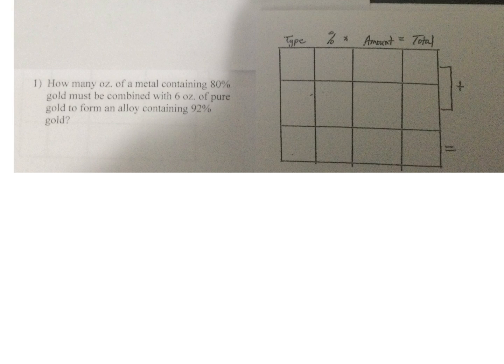We're doing a mixture problem here. We have 80% gold mixed with pure gold. Anytime you see the word pure, that means it is 100%. So we're looking at two different types: 80% gold mixed with 100% gold to end up with a mixture that is 92%.